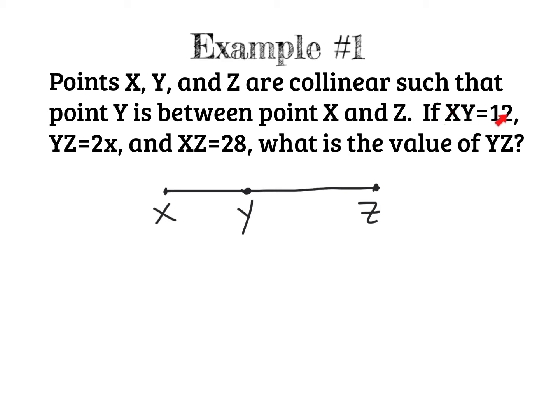Now, if XY equals 12, so I'm going to label this piece XY equals 12. YZ equals 2X, so this second piece equals 2X. I also know that XZ equals 28. So the total length from X to Z is 28. What is the value of YZ? What is that length? Before I figure out what that length is, I need to make sure that I multiply things, combine them, add them, make an equation out of these two.